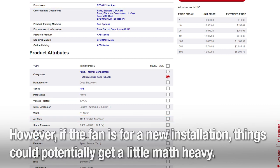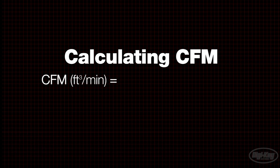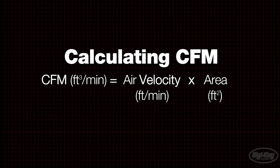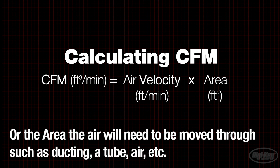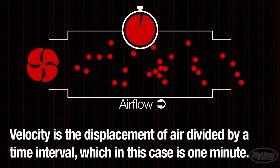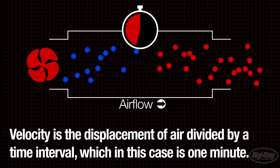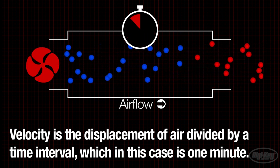However, if the fan is for a new installation, things could potentially get a little math heavy. CFM equals the air velocity multiplied by the area in square feet — the area the air will need to be moved through, whether through ducting, a tube, air, etc. Velocity is the displacement of air divided by a time interval, which in this case is one minute.